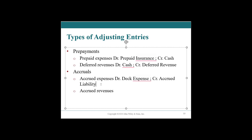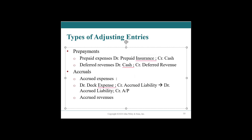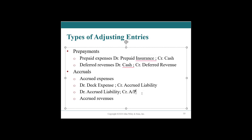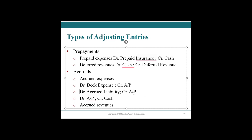So we owe somebody money and they haven't invoiced us yet. When they do invoice us, we would debit the accrued liability and credit accounts payable, because now there's an actual invoice saying 'you owe me money.' If we want to take it further: that's the economic reality of the accrual. When they invoice us we book accounts payable, and when we actually pay them we debit accounts payable and credit cash.